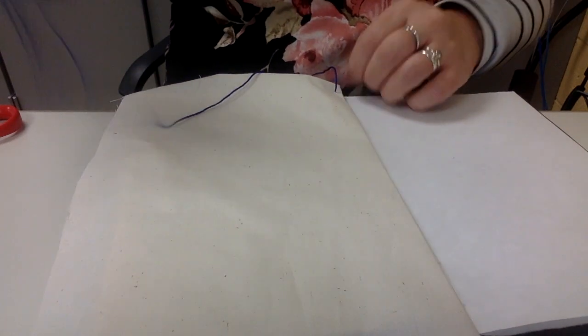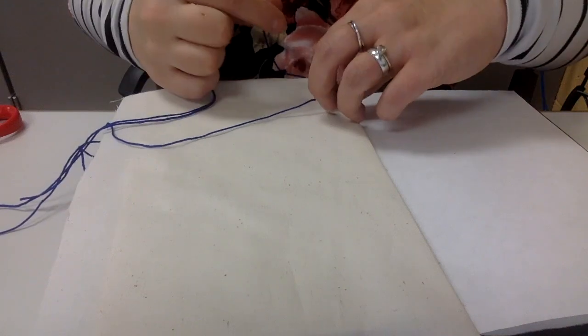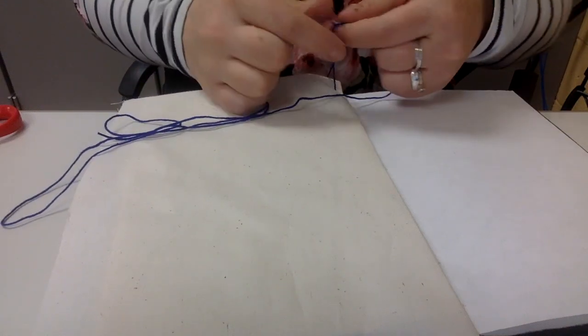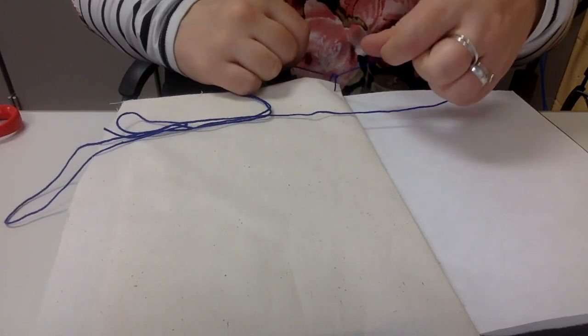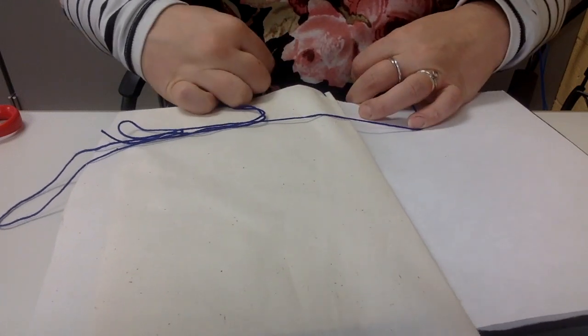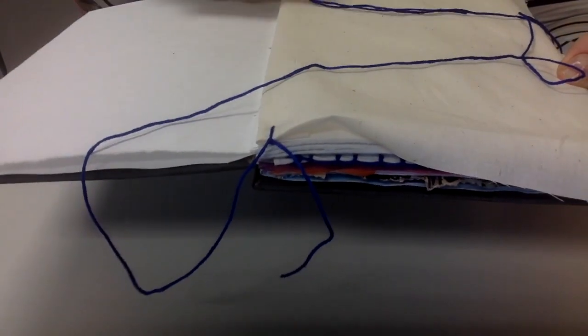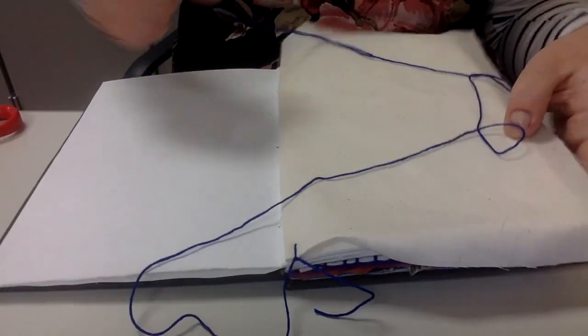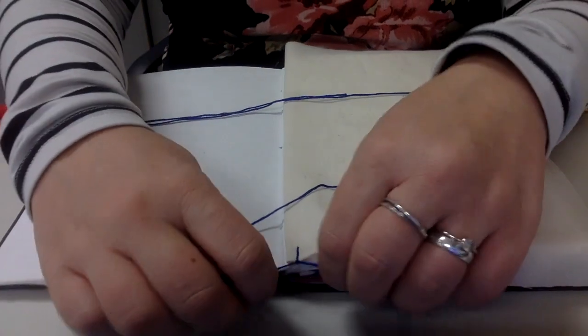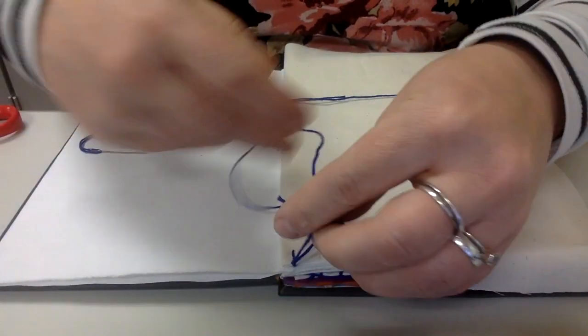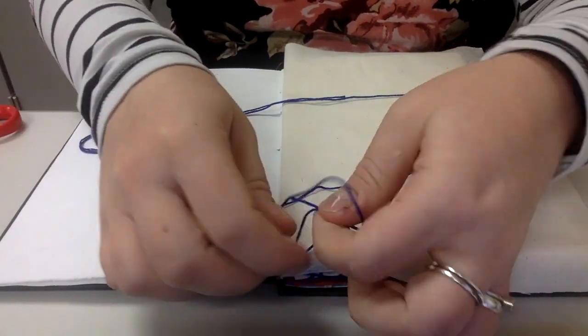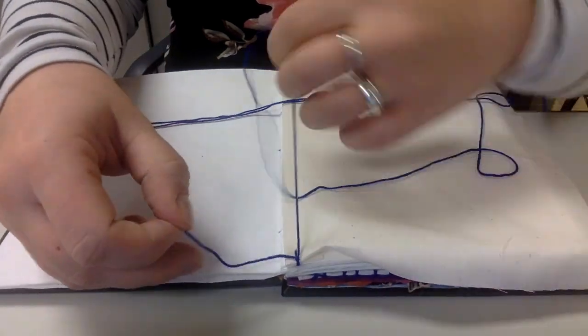Pull it until you have about a three-inch tail at the back, and then what you're going to do is tie that so that it won't go any farther. You kind of want to create your knot so that it's right on the edge of the page, just like that. And then you can do a double knot—I'm going to tie it again here one more time.